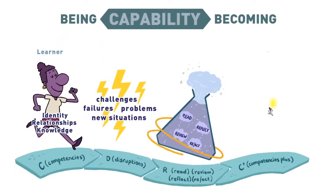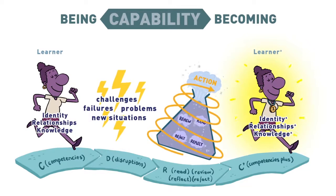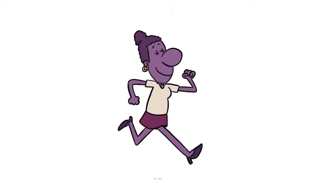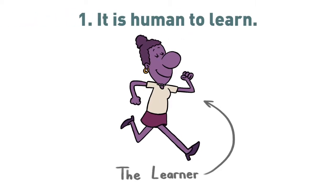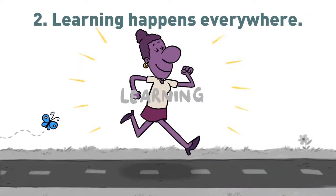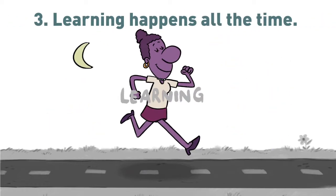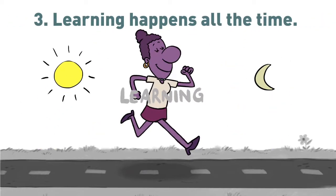Capability is a process of being and becoming. The capability approach to learning is a practical way to learn and to help others learn. It starts from five facts. One: it is human to learn, so everyone can and does learn. Two: learning happens everywhere and it's a lifelong process. Three: learning happens all the time, from the time we are born